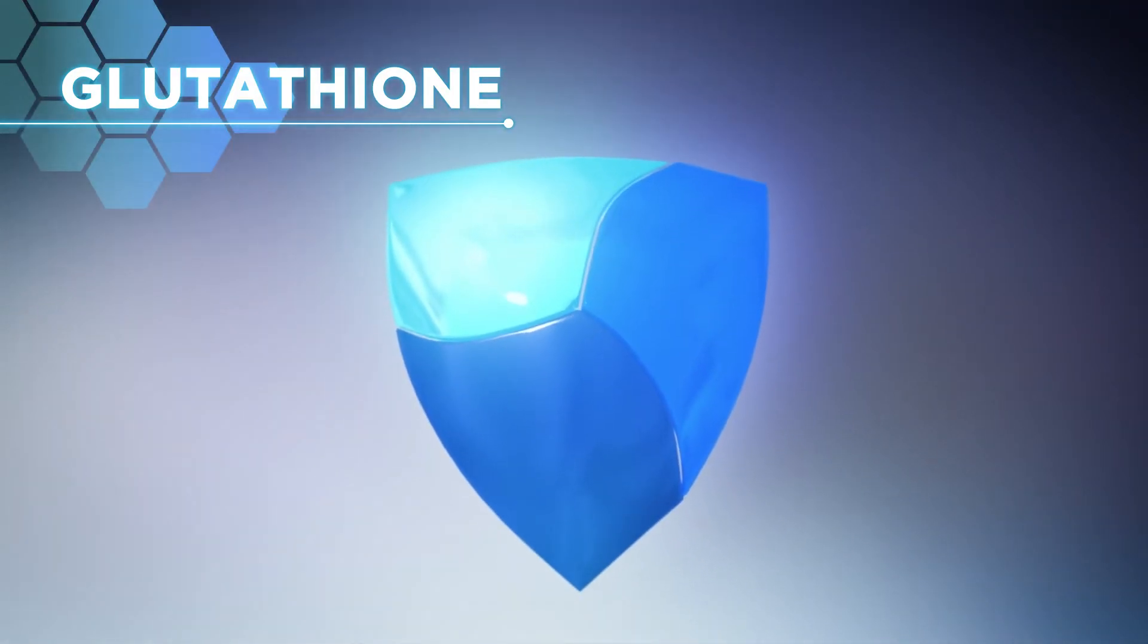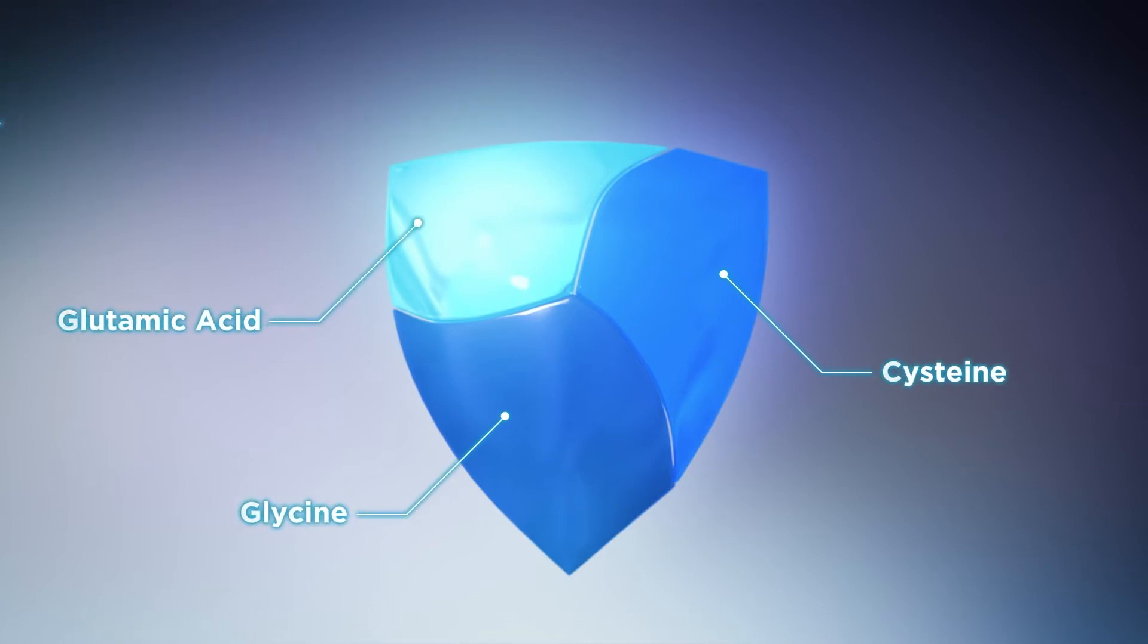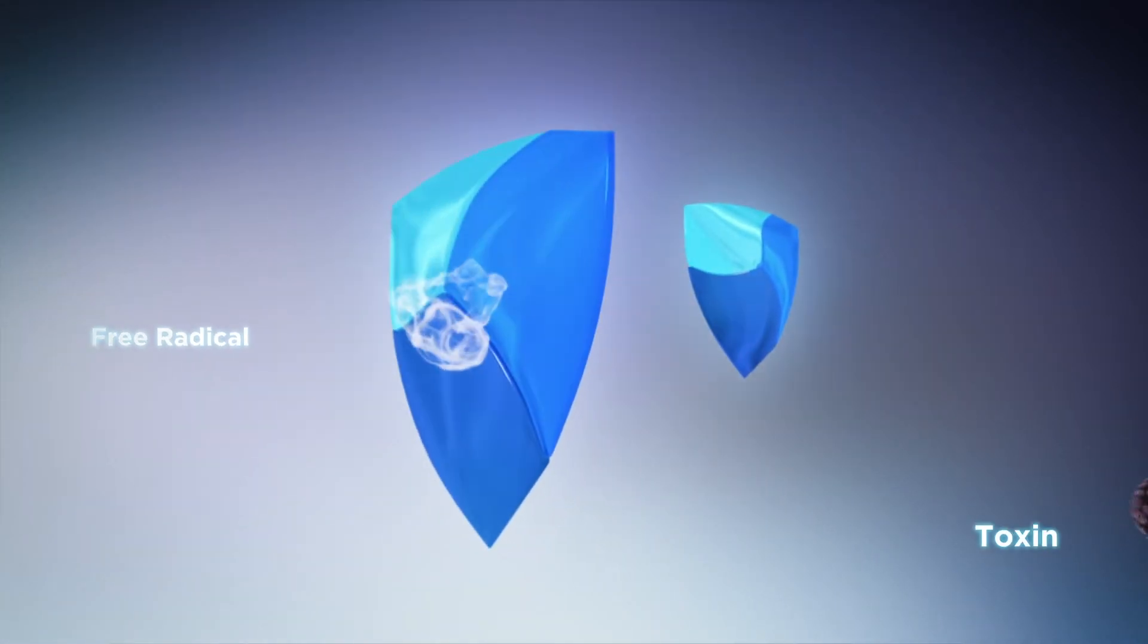Glutathione is made of a combination of three amino acids: cysteine, glycine, and glutamic acid that works to neutralize and remove harmful free radicals and toxins from your cells.